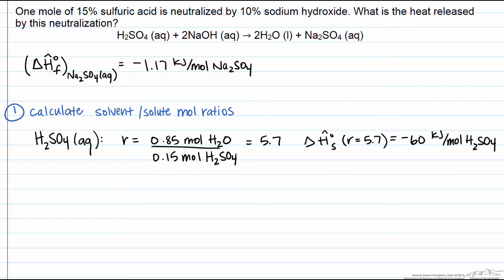Now we're going to do the same for aqueous sodium hydroxide. Here our ratio is 0.9 to 0.1, since it's 10% sodium hydroxide, and therefore our R equals 9.